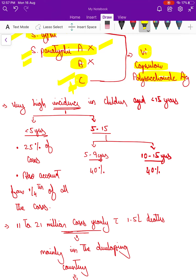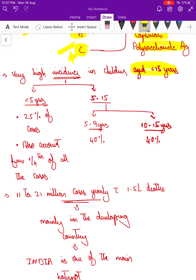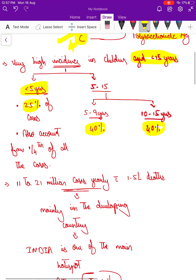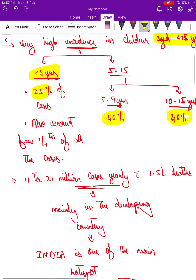India is a highly incident country, and the disease mainly affects children aged below 15 years. Of that, less than five years accounts for around 25 percent, five to ten years is around 40 percent, and 10 to 15 years is around 40 percent among the affected age group.